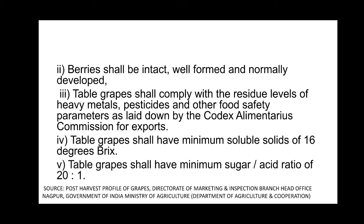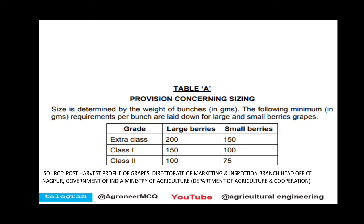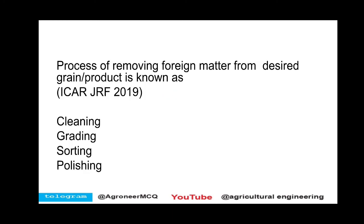So if we have to do grading of grapes, we have to consider all these aspects — then whatever classification we get is called grading. If classification is based on a single physical property, that is called sorting. There are three grades: Extra Class, Class 1, and Class 2. Large berries and small berries with specific weight of bunches in grams are considered for each grade. Weight alone is not the only property; all the minimum requirements along with weight are used together to assign the grading class.